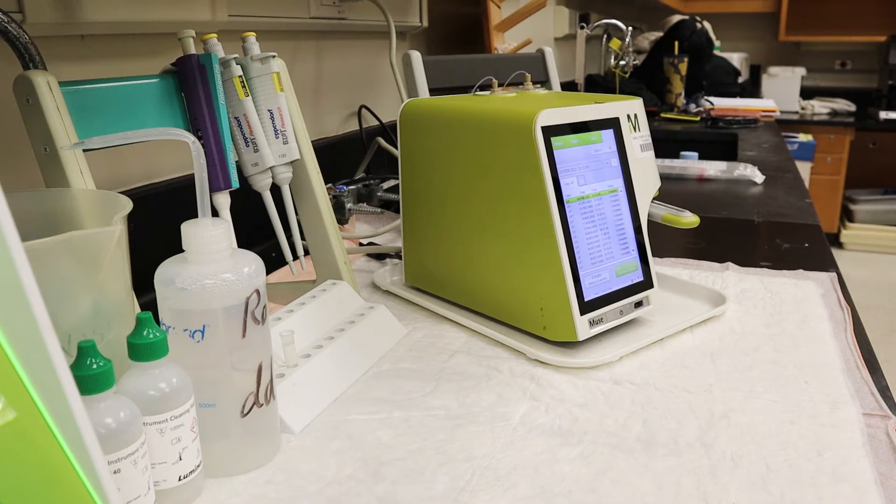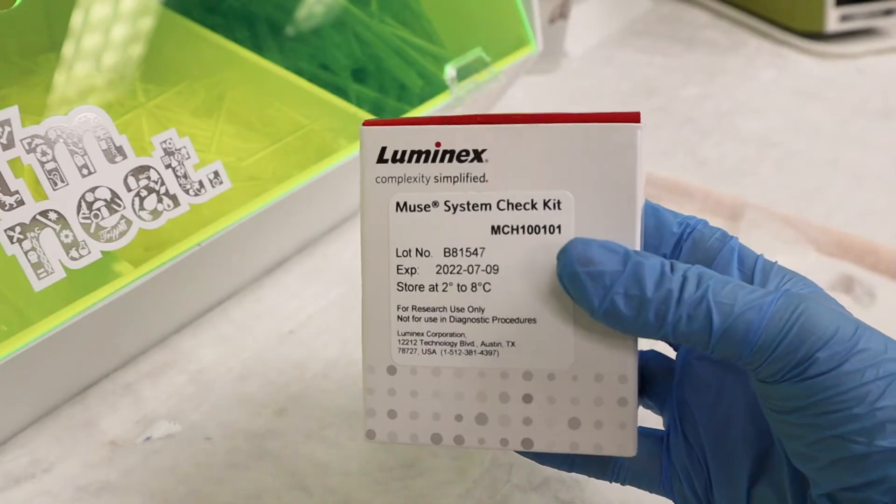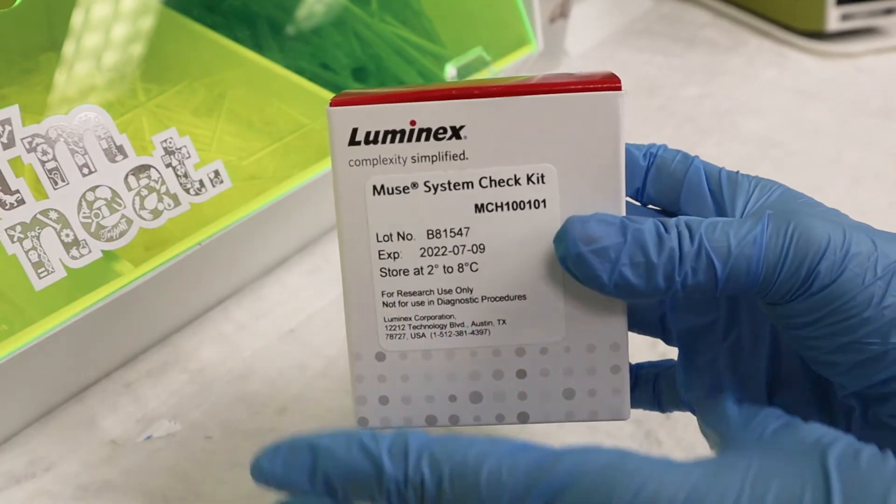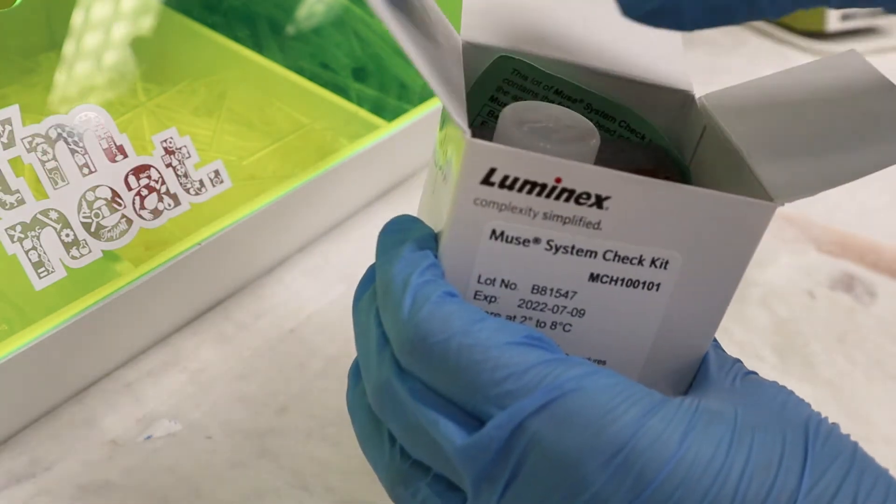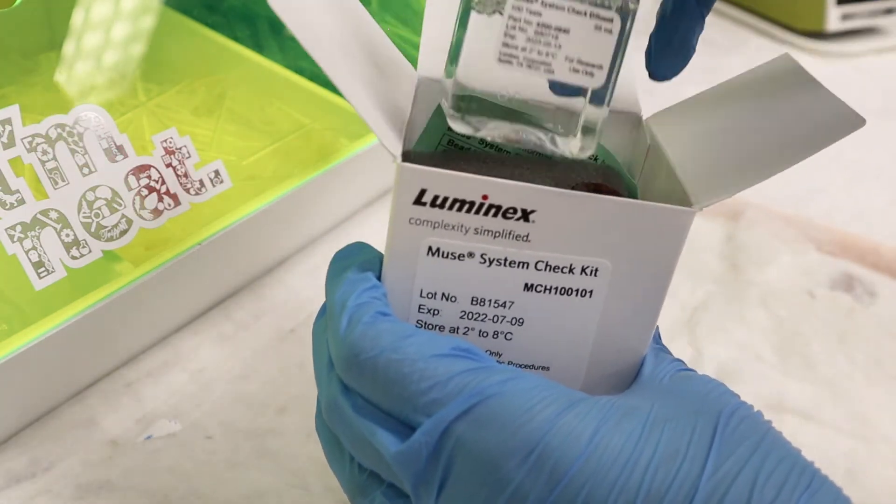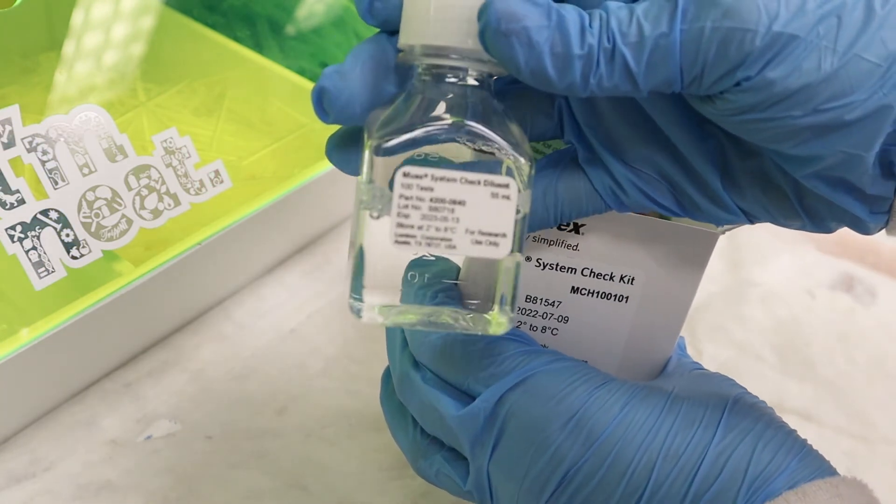When the complete system clean is finished, a log will appear with the dates and times the previous system cleans were accomplished. The system check is performed after the complete system clean and must be completed every time the Muse analyzer has been turned off.